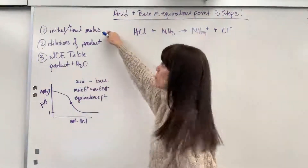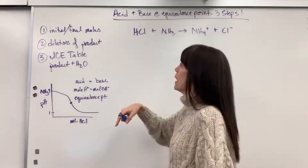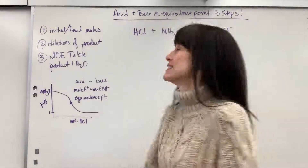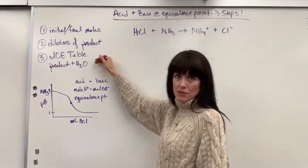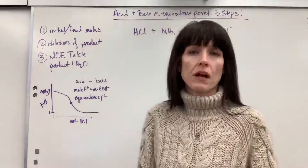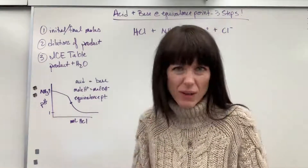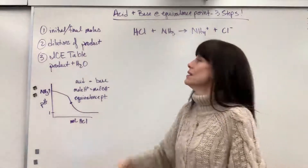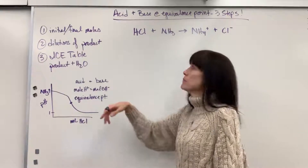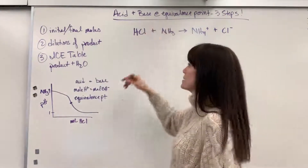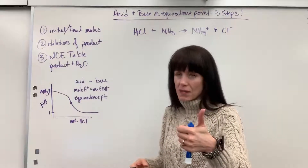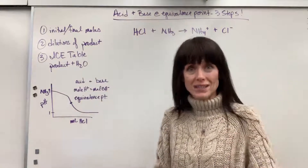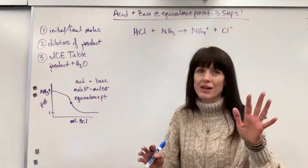If you do initial final moles and it ends up that these moles are exactly the same — identical initially — it means you have to do step two and step three. If they're not identical, watch the video on Henderson-Hasselbalch. That's the easy, fast, dirty way to figure out pH — it'll save you a ton of work. But if you have the exact number of initial moles, there's no way around it — you use the three steps. So: initial final moles; if initial moles are the same, then we do a dilution for the product to find the new concentration once the two solutions are added; and then lastly, you do a new ICE table with that product plus water. I'll show you how to do all of this.